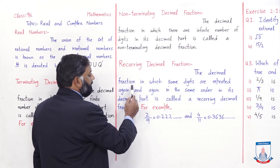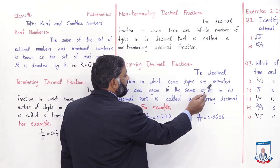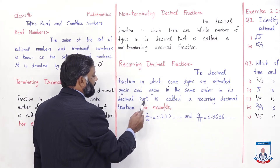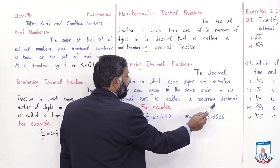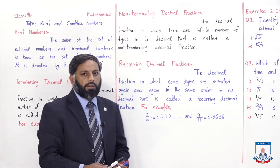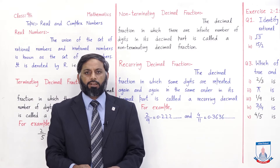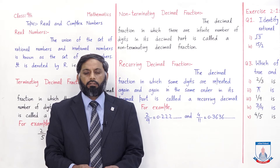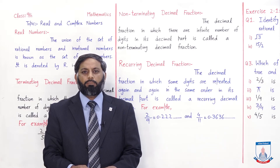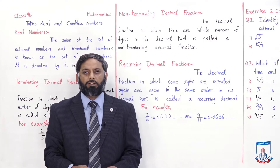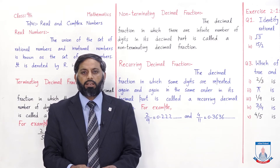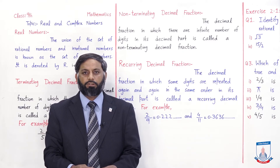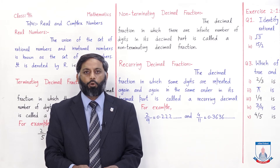Recurring decimal fraction کی definition: the decimal fraction in which some digits are repeated again and again in the same order in its decimal part is called a recurring decimal fraction. Recurring decimal fraction کے لیے ضروری ہے کہ fraction non-terminating ہو۔ Decimal part میں digits infinite ہوں گے، لیکن وہ same order میں repeat ہوتے جائیں گے۔